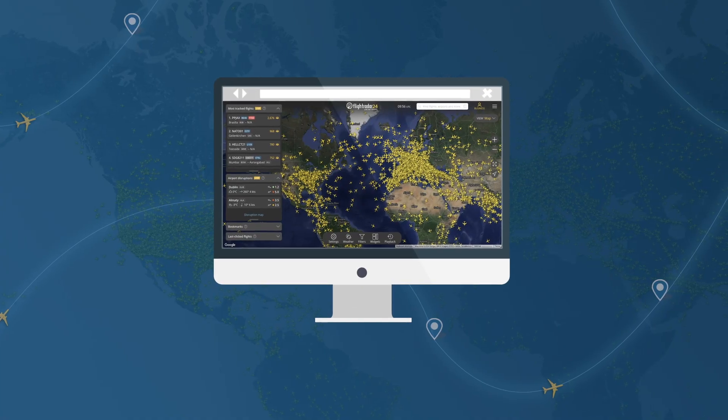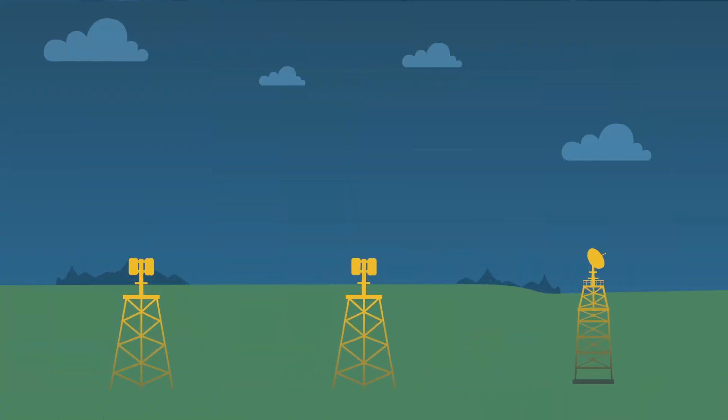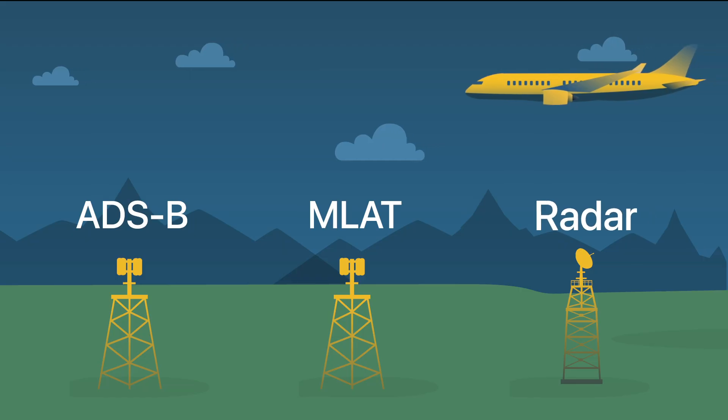Flightradar24 displays thousands of flights each day operating in all areas of the world. It combines data from several data sources including ADS-B, Multilateration or MLAT as it's known, as well as radar data.